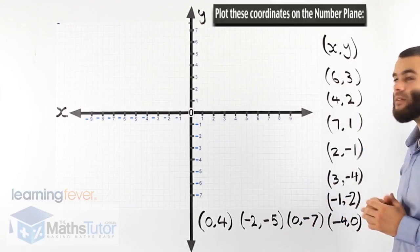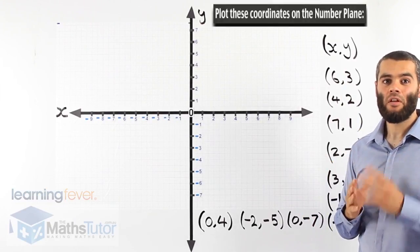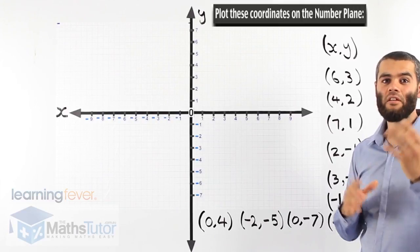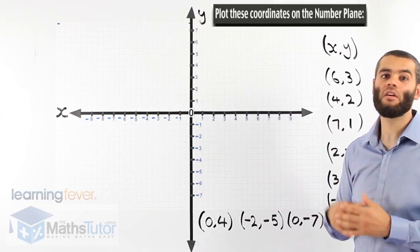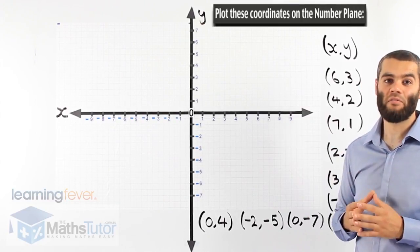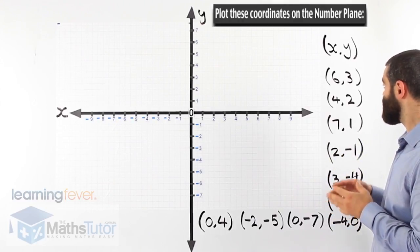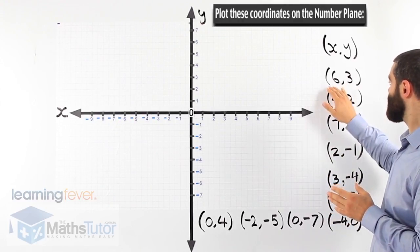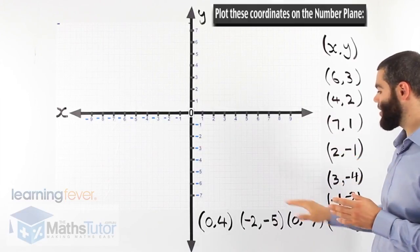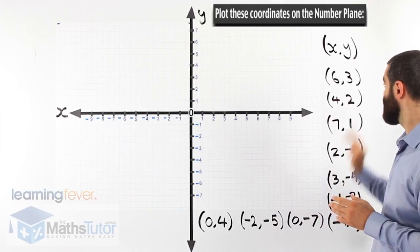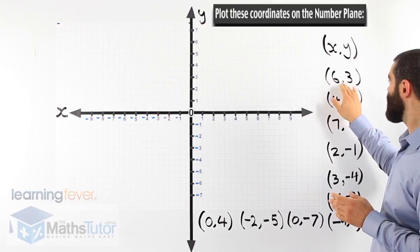We have coordinates here. The coordinates are written x, then y — like the alphabet. X comes first, then y comes second. We're asked to plot these coordinates, which are points on the number plane. The first one is 6, 3.